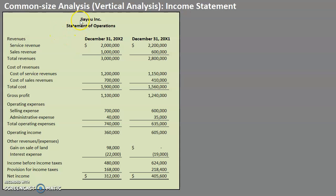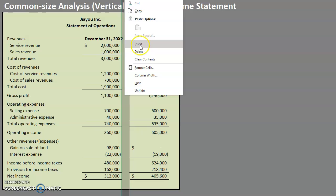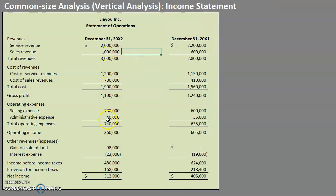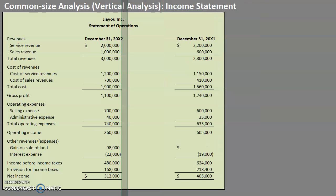Here we have GIO Inc. and this is their income statement — another word for income statement is the statement of operations. When performing a vertical analysis, think of it as analyzing all of the accounts vertically, up and down. We are trying to see what percentage each line item is as a percentage of a particular area or item. The line item we use when performing a vertical analysis on the income statement is revenues — we always express every line item as a percentage of total revenues.